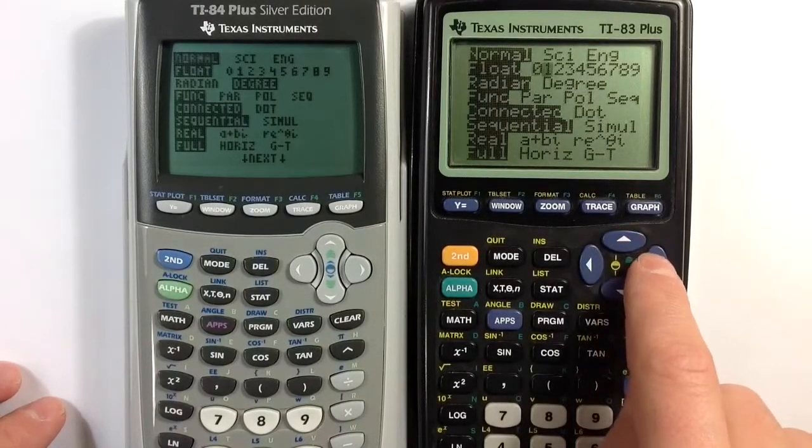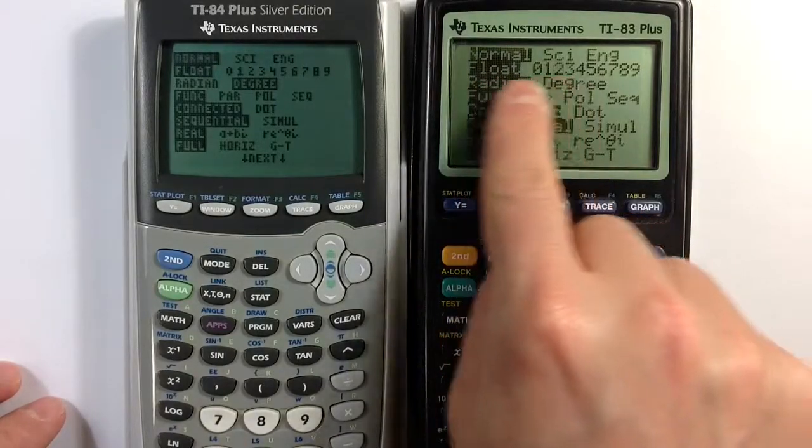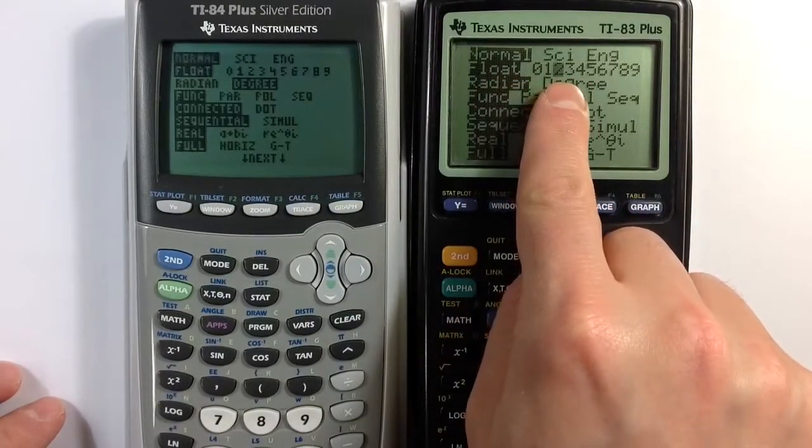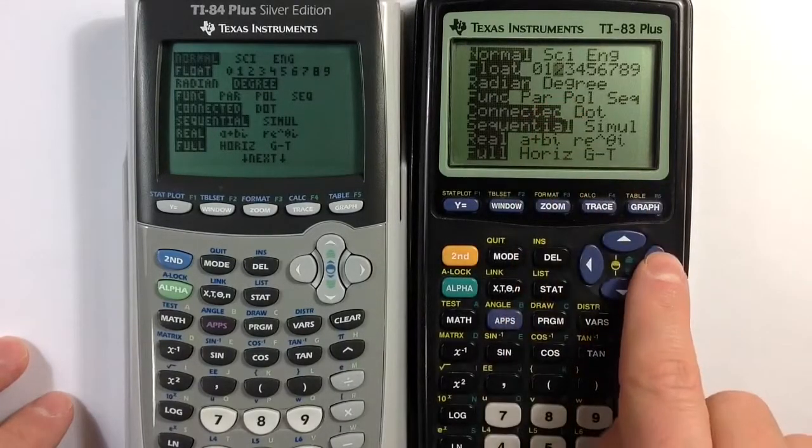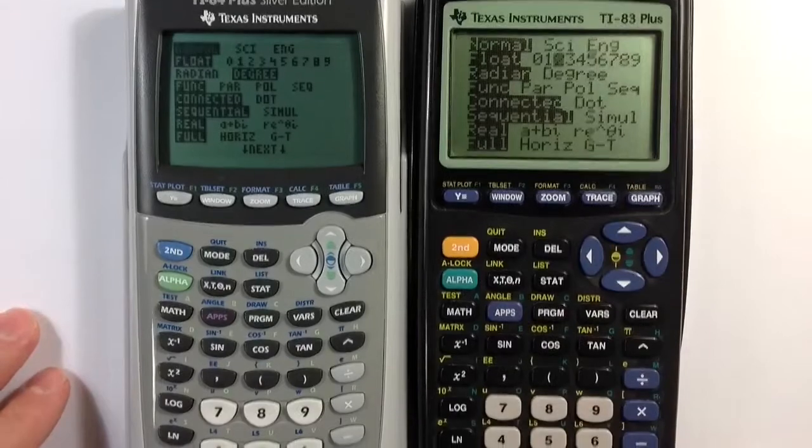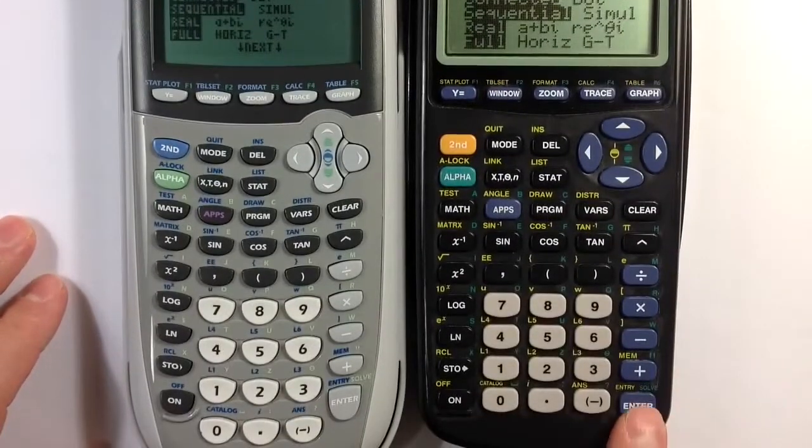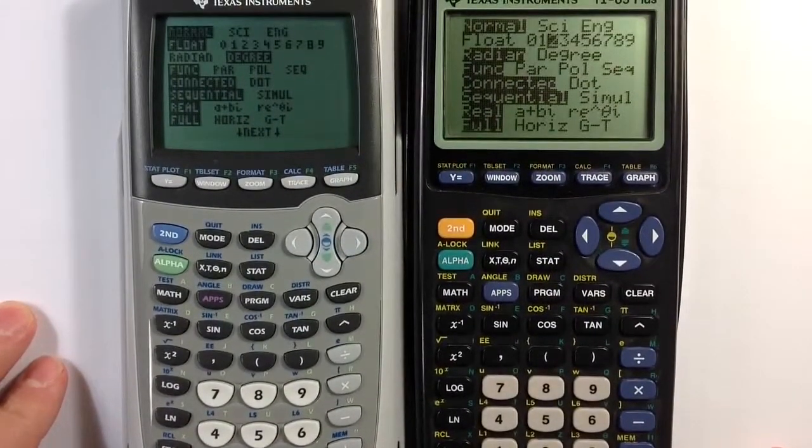So if I wanted to set the calculator so that numbers would round to two decimal places, I could go to that, get the blinking cursor onto that value, and then if I hit enter it will select that as an option.